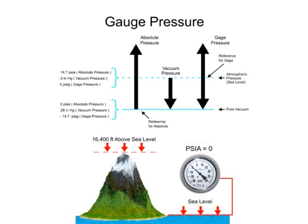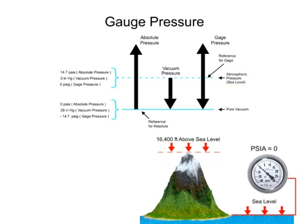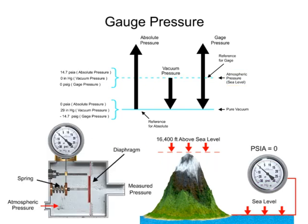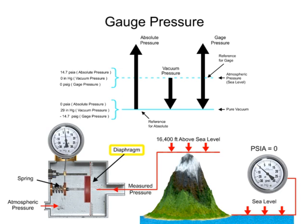Measurement of gauge pressure can be positive or negative, and is determined by whether it is above or below atmospheric pressure. Gauge pressure can also be measured with a mechanical diaphragm gauge. Using atmospheric pressure as the reference, the diaphragm bends towards the side with the lowest pressure, operating the spring that is mechanically linked to the gauge pointer.